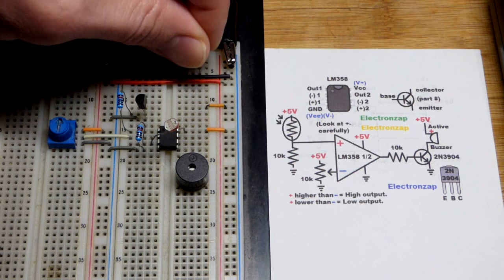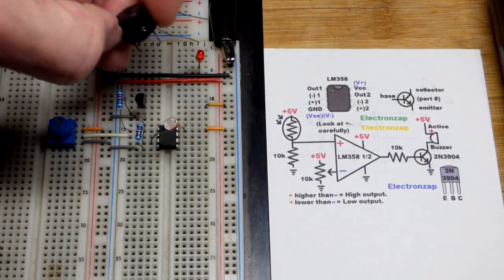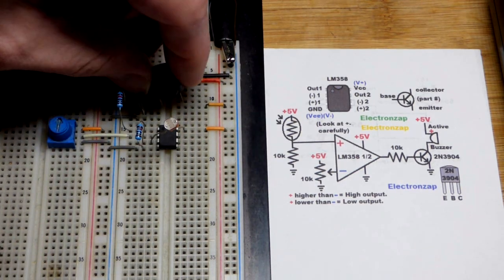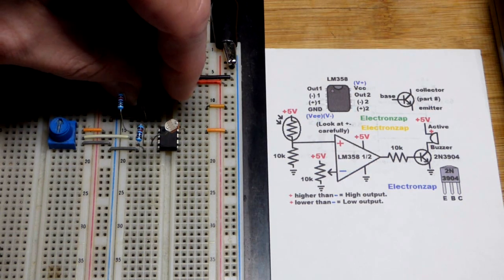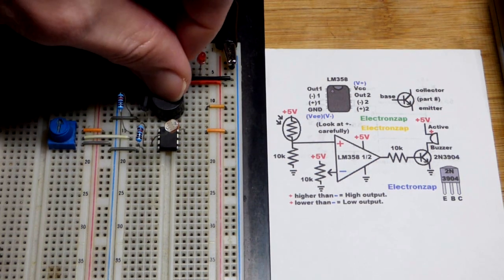Then we just remove the LED. It needs a protective resistor. The buzzer does not. We can connect it directly to the circuit. We can put five volts across it.